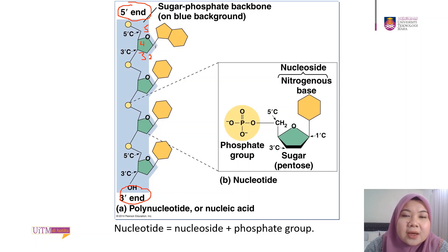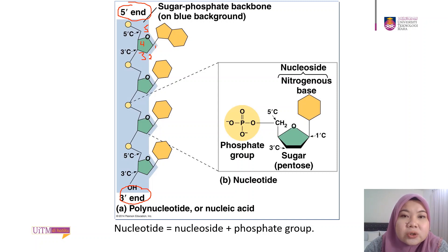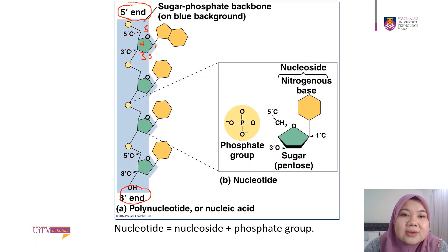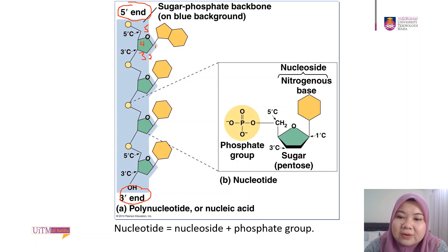You can also see the sugar-phosphate backbone. The sugar-phosphate backbone is the repetition of phosphate-sugar, phosphate-sugar, and so on. We call it the sugar-phosphate backbone because this part only consists of the repetition of sugar and phosphate.